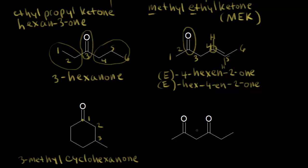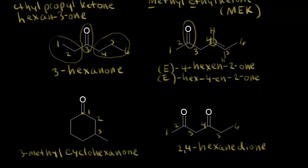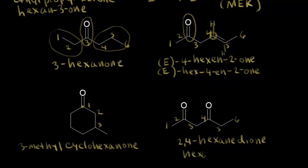Finally, what happens if you have two ketones in the same molecule? We number from the left: one, two, three, four, five, and six. We have two ketones, so it's going to be a dione. One way to name it: hexane with two ketones gives hexanedione. The carbonyl carbons are at two and four, so 2,4-hexanedione is one way to do it. The more modern way: hexane-2,4-dione. That's it for nomenclature of aldehydes and ketones.